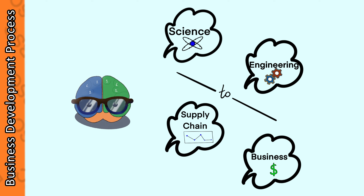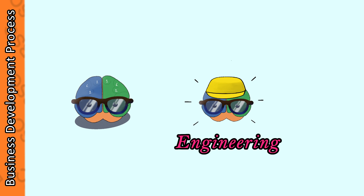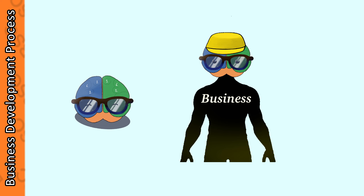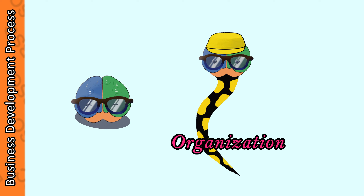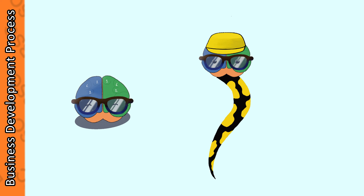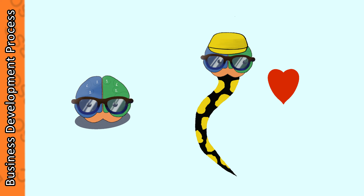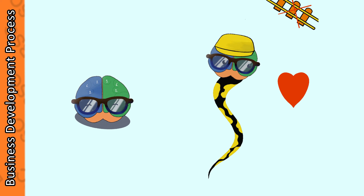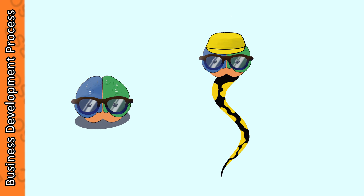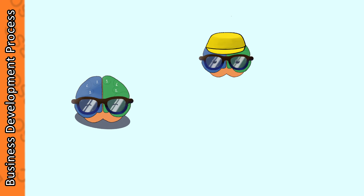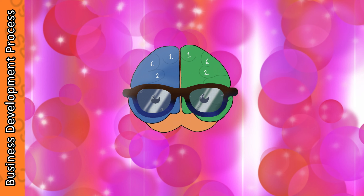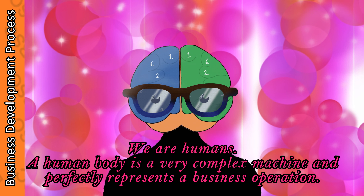The transition from studying engineering and science to business and supply chain was like two worlds colliding. If engineering was the head of an organization, business will be its body. When we talk about an organization, it is a very strange creature. It can take any shape or form. It can sense the feelings of humans and can navigate through different terrains and difficult times. This means that an organization is a living creature. Now this creature can be anything like lion, squid or tortoise. But an ideal state for its operation is that of a human body, also because we can relate to it better.